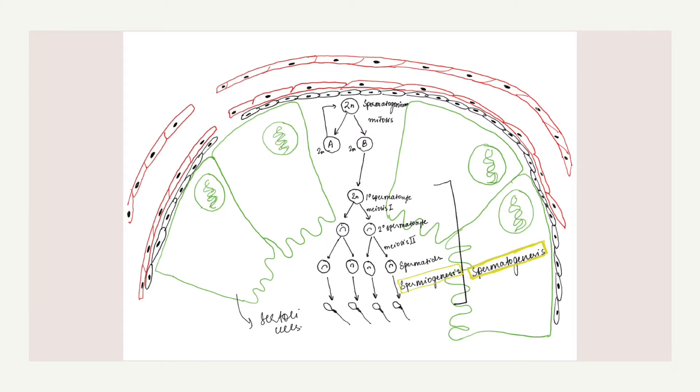The spermatogonia are in the basal compartment deep to the level of the tight junctions and the more mature forms such as primary and secondary spermatocytes and spermatids are in the adluminal compartment. The function of the blood testis barrier is to prevent an autoimmune reaction.